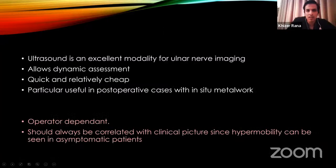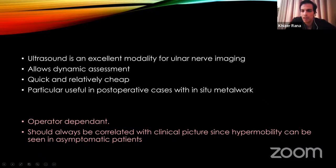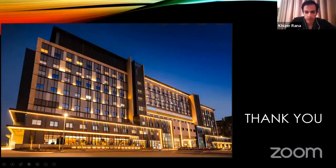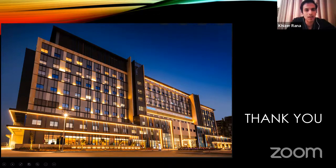In summary, ultrasound is an excellent modality for ulnar nerve imaging. Its main benefit is that it always allows dynamic assessment, which is not possible with other modalities. It is relatively quick and cheap, and particularly useful when MRI or CT cannot be utilized — such as when metalwork is in situ or the patient cannot be positioned in the scanner. The main con is that it is operator-dependent, requires significant practice, and findings must always be correlated with the clinical picture, since hypermobility can be seen in asymptomatic patients.